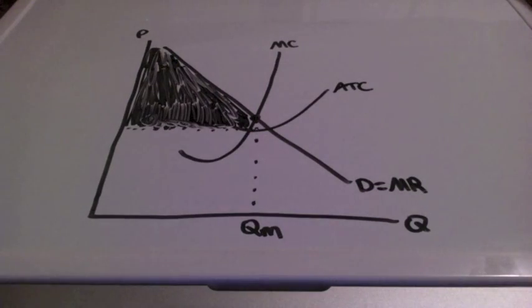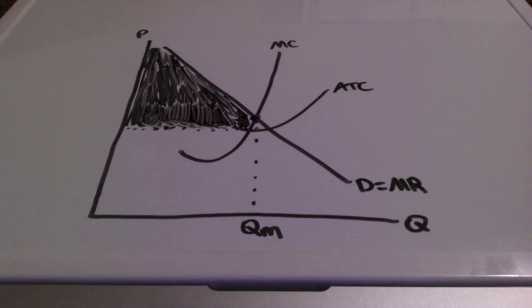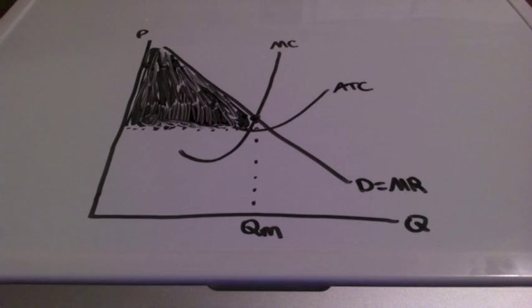But what about price? Price is nowhere and everywhere — it isn't set in one spot. A perfectly price discriminating monopoly will have higher profits because they're willing to lower their price.